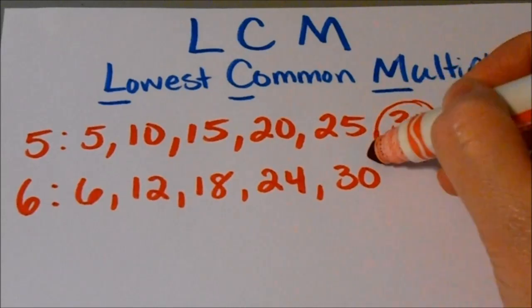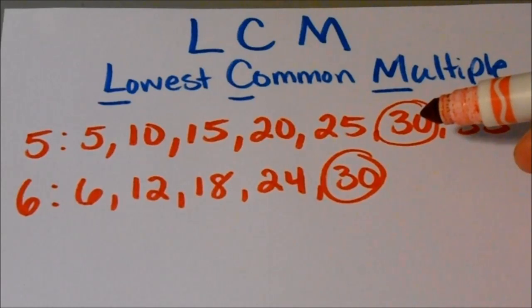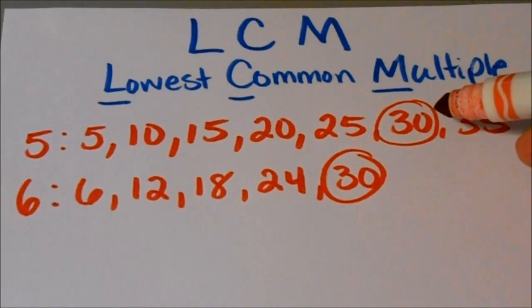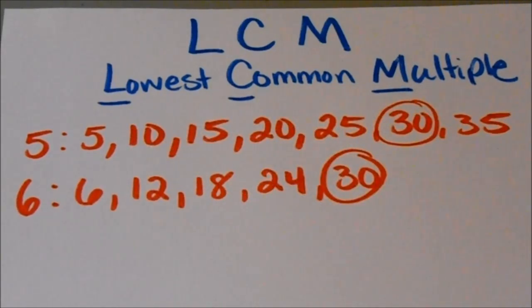So this can be very helpful when you're trying to like add or subtract fractions because you have to find the lowest common multiple to find that common denominator between the two. And this method works very well when you're working with small numbers like 5 and 6.